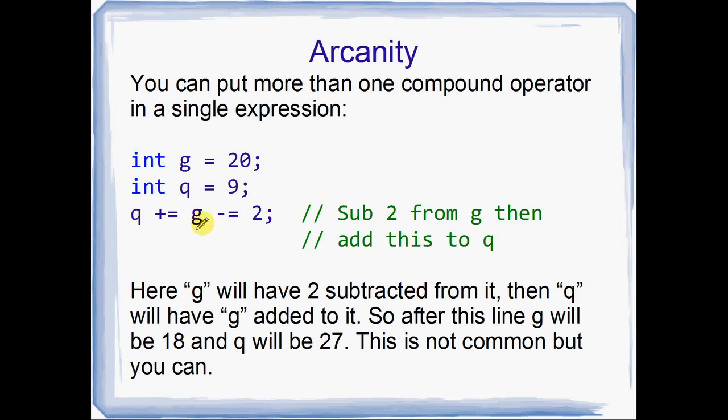Okay, so q plus equals g minus equals 2. What's this going to do? It's pretty easy, really. All it's going to do is, first of all, read it from right to left. So g minus equals 2, g is going to have 2 subtracted from it, make it 18. And q plus equals g. Well, g was 18 from the previous little operation that we did. And q is 9. 18 and 9 gives you 27. So that's going to be our final answer. g is going to have 18 and q will be 27. Strange trick.